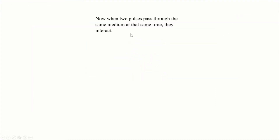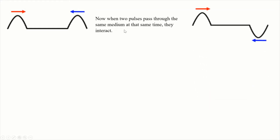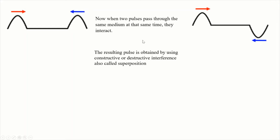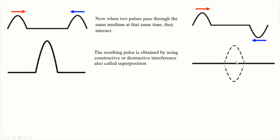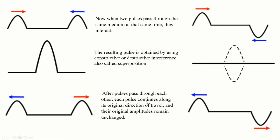Now, when two pulses pass through the same medium at the same time, they interact. The resulting pulse is obtained by using constructive interference or destructive interference. This is also called superposition. After pulses pass through each other, each pulse continues along its original direction of travel and the original amplitudes remain unchanged.